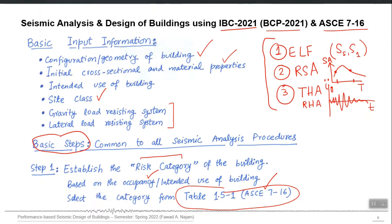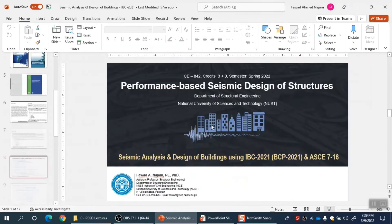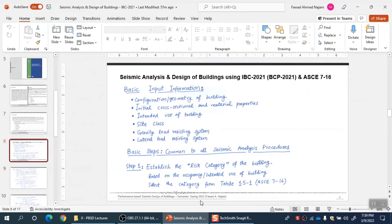One of the major differences between UBC 97 and IBC — and between BCP 2007 and BCP 2021 — is that seismic zones are no longer used. Instead, we now use seismic design categories (SDCs), which depend on the risk category. So, no more seismic zones; instead we use SDCs and risk categories. Let me now open ASCE 7-16 and Table 1.5-1 to explain how you actually establish the risk category of your building.